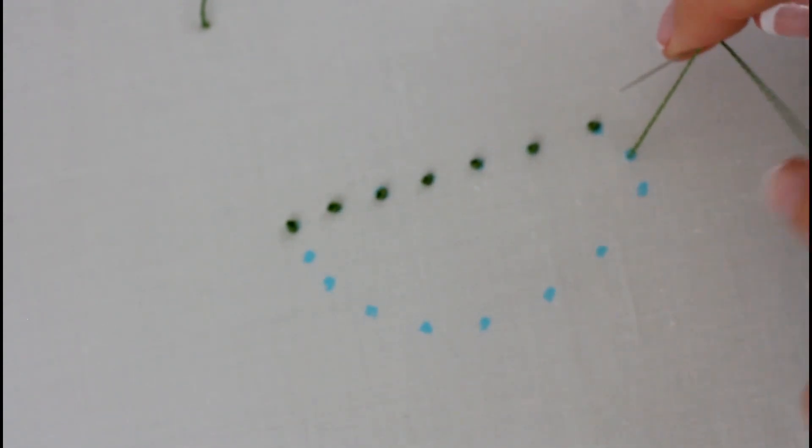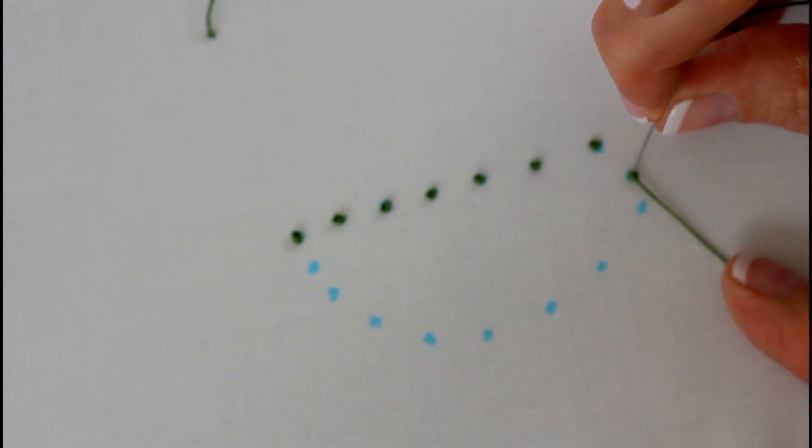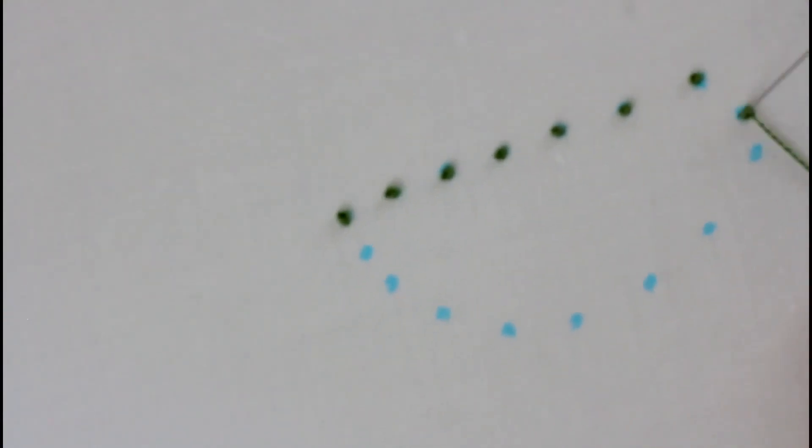So come in from the left, go under the thread, around the top to the right, put your needle in, pull down to the bottom, and pull through.